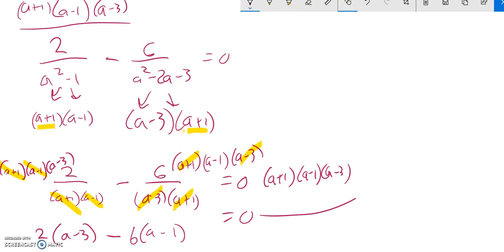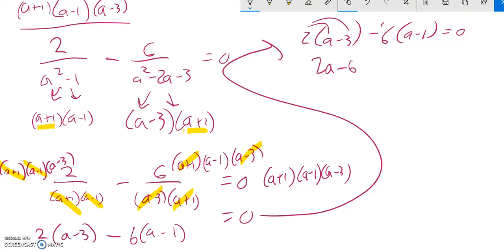So now this equals this. Move it up here. So I have this 2 times a minus 3, minus 6 times a minus 1 equals 0. Keep working to solve that, distribute that 2 into there. 2a minus 6, distributing that negative 6. Negative 6a plus 6 equals 0.